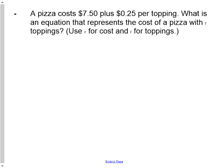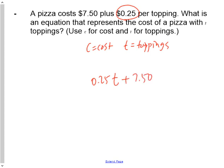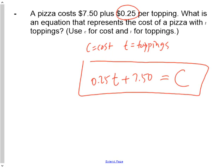Last question: a pizza costs $7.50 plus $0.25 per topping. What is an equation representing the cost of a pizza with T toppings? C is the cost and T is the number of toppings. Multiplying the number of toppings by $0.25 gives the topping cost, plus the base cost of $7.50 equals the total. The equation is 0.25T + 7.50 = C.